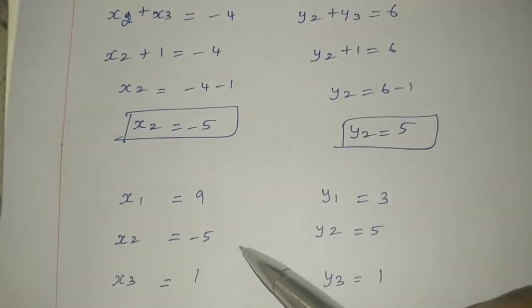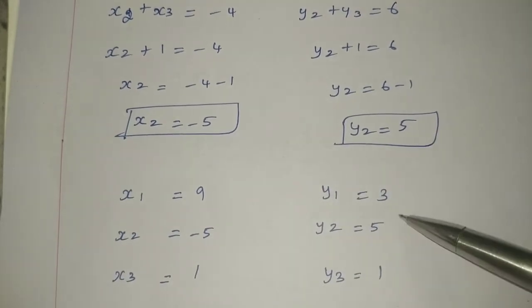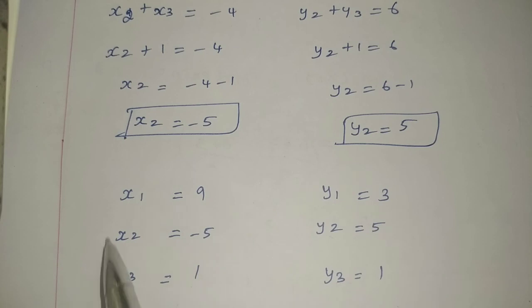So we have found all vertices: x1, x2, x3 and y1, y2, y3. This gives us the vertices of the triangle. Thank you.